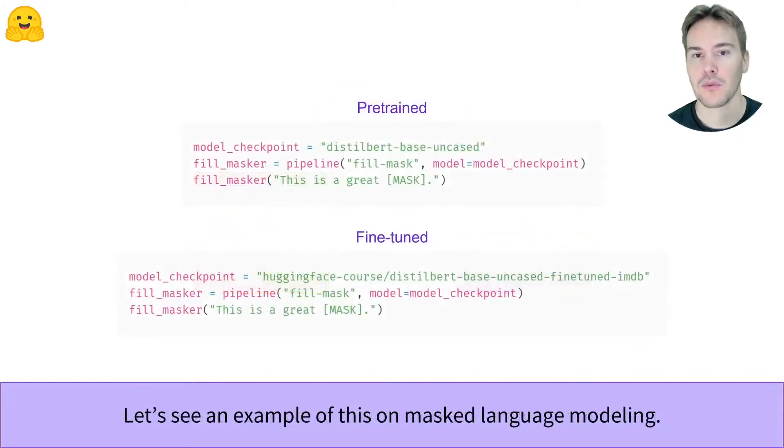Let's look at an example with masked language modeling by comparing the outputs of the pre-trained Distilbert model with the version fine-tuned in chapter 7 of the course, linked below.